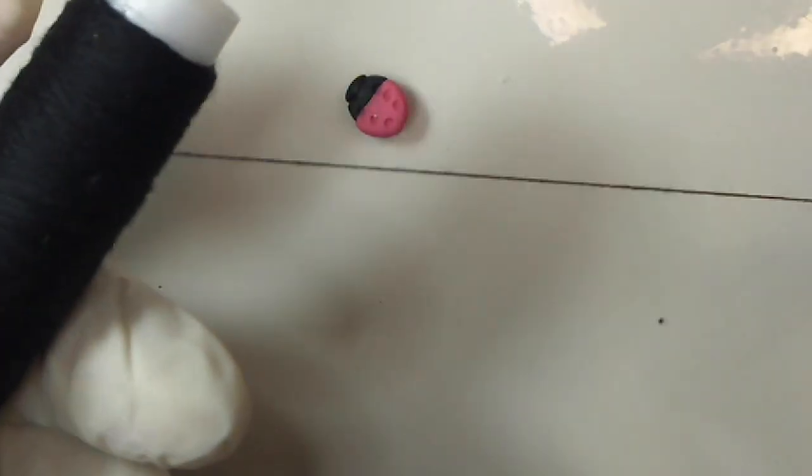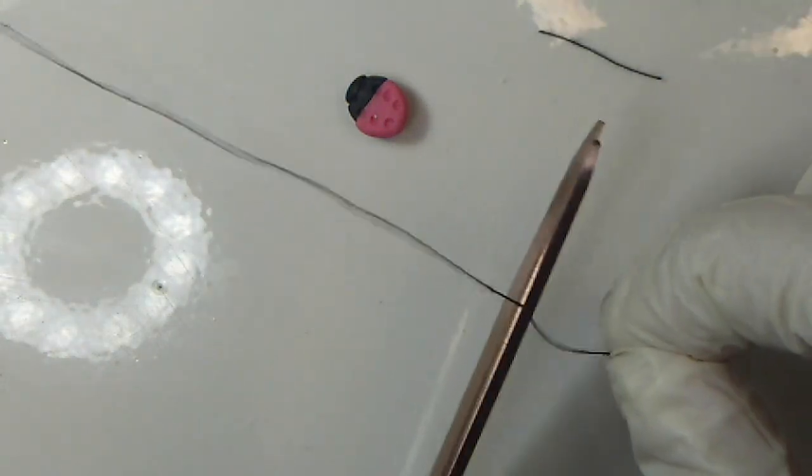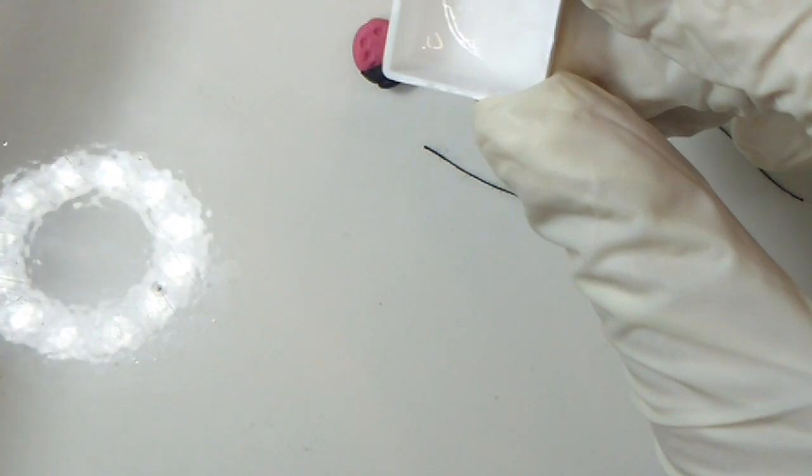Use black sewing thread for the feet. Cut your pieces large enough so that they're easy to handle. You can trim them later. Squirt some super glue into a little container or a sheet of tin foil so that it's easy to get to. Soak your pieces a bit in the super glue before adding them to your ladybug.